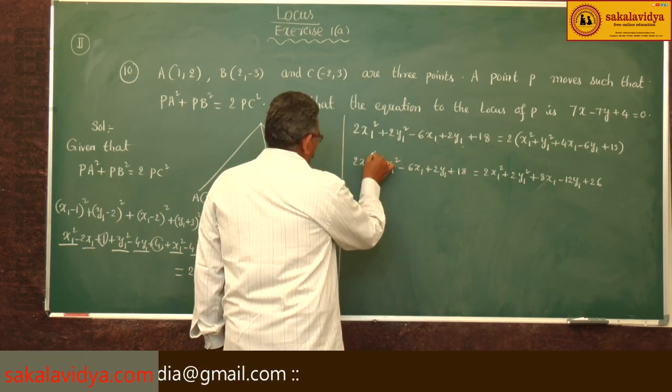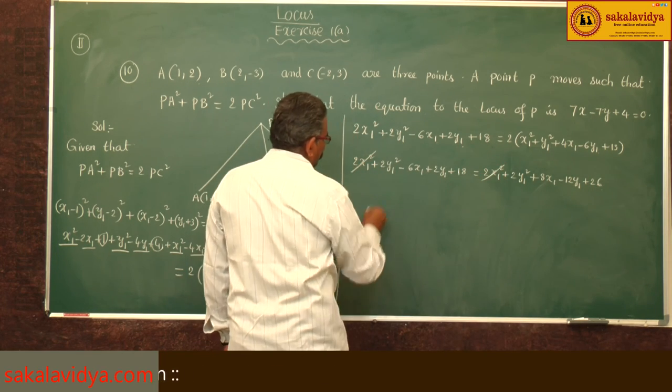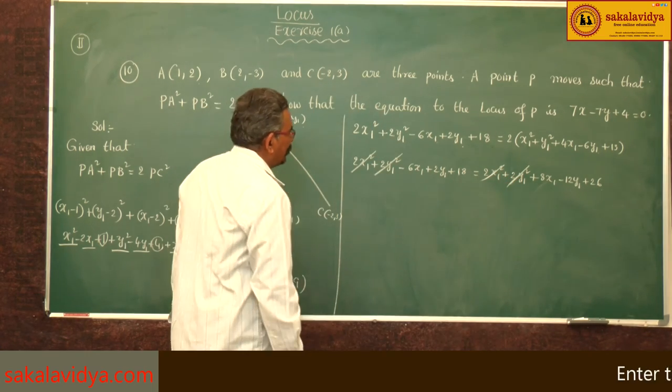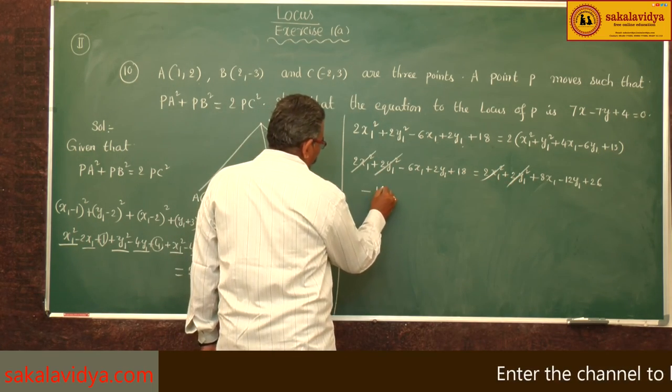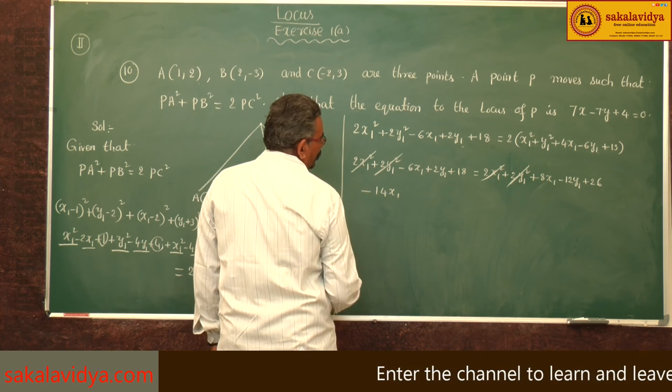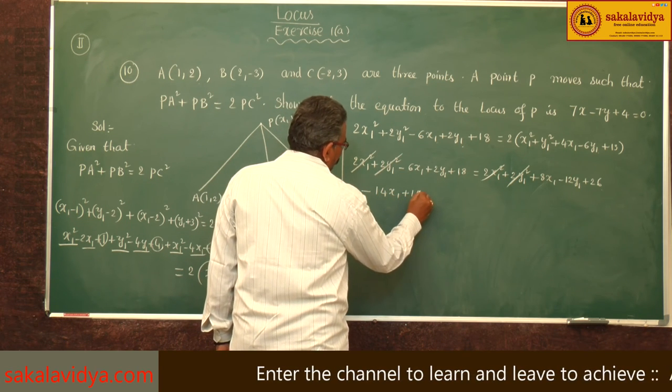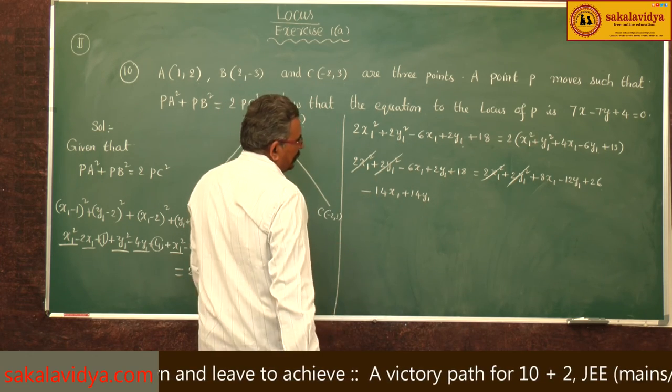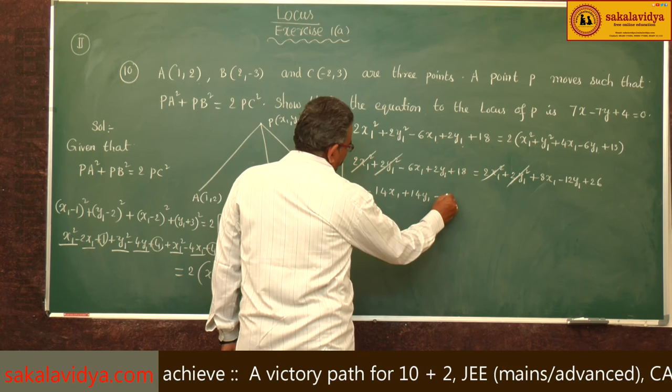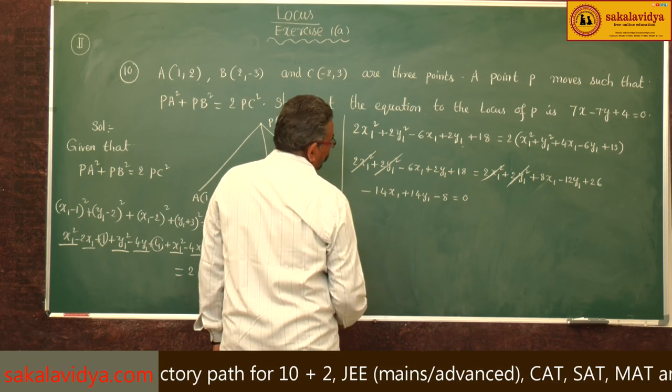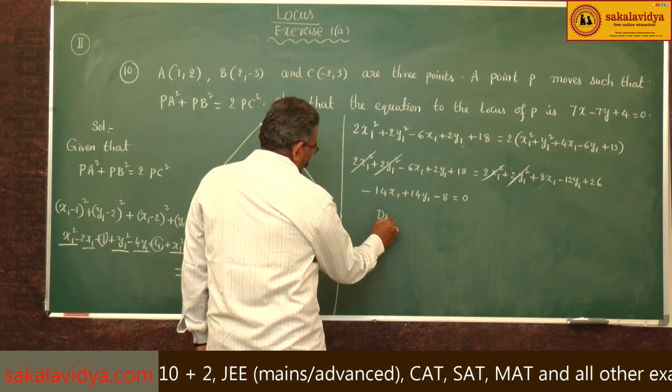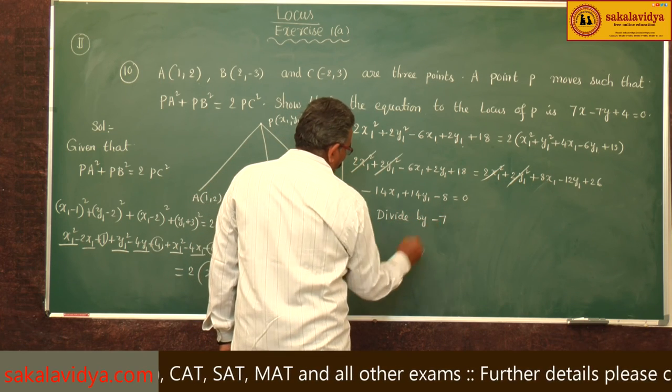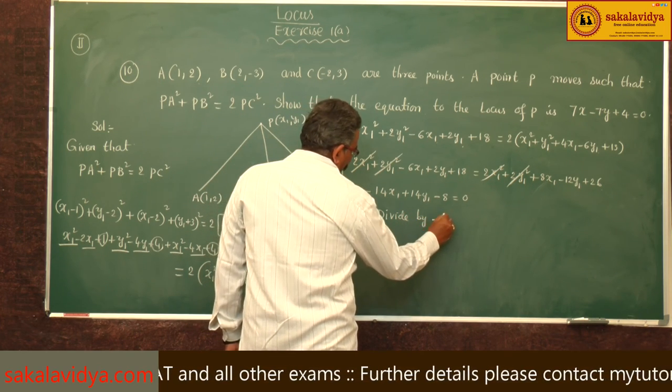2x₁² and 2y₁² cancel on both sides. So -6x₁ - 8x₁ is -14x₁, plus 2y₁ + 12y₁ is 14y₁, and 18 - 26 is -8, equals 0. Divide by -2: 7x₁ - 7y₁ + 4 = 0.